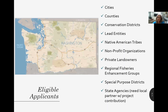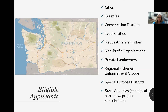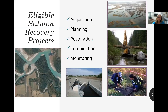Who's eligible to apply? As you can see from this list, almost any organization may apply for a salmon recovery grant. Even private landowners may apply for restoration projects on their own property. Federal agencies and for-profit companies are not eligible applicants, but if you have a restoration project on land owned by the federal government or a for-profit entity, it just needs to be sponsored by an eligible applicant with the landowner on board. For surfboard, state agencies are eligible but must have a local partner to provide matching funds or in-kind contribution. Now other grant managers will go over the four types of eligible projects: acquisition, planning, restoration, combination, or monitoring.